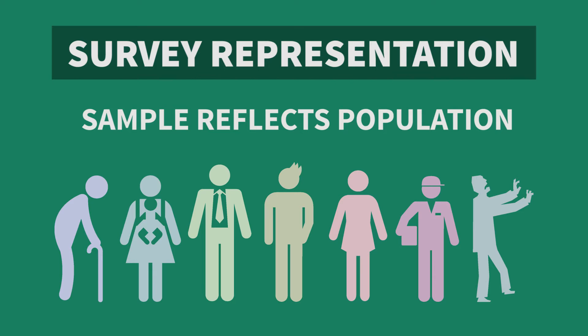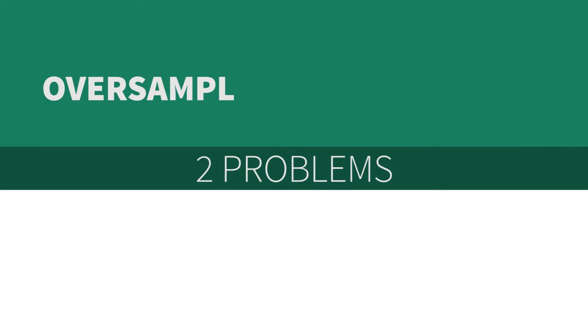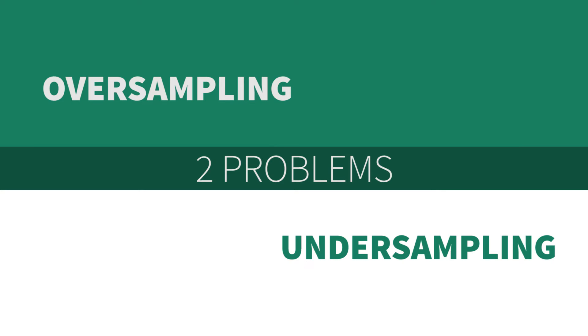such as adults in the United States. Sometimes, perhaps almost all the time, representativeness is hard to achieve. Even the most careful efforts of data collection are prone to two problems: oversampling some groups and undersampling other groups.